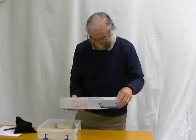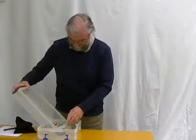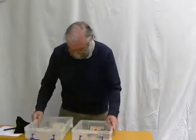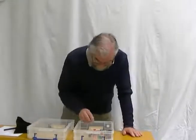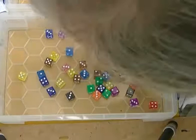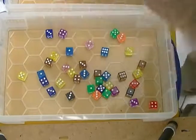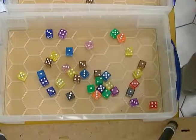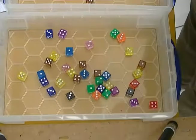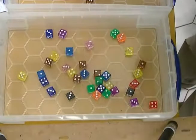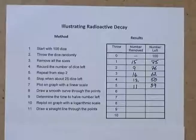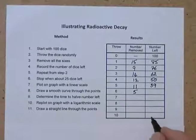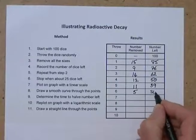Put those away. And how many have we got this time? One, two, three, four, five. That's five more dice gone, which leaves us thirty-four left.